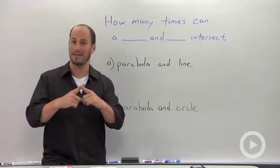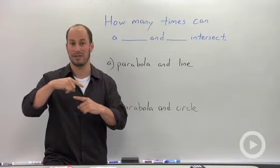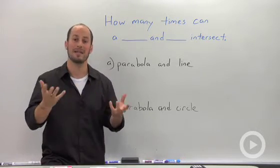With lines we really only had a couple of options. Our lines either crossed at one spot, they were parallel so they crossed at no spots, or they were the same lines so they crossed at an infinite number of spots.